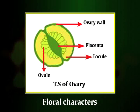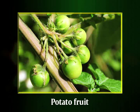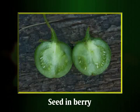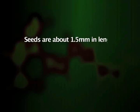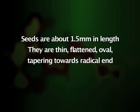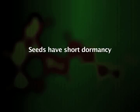The gynoecium consists of a distinct ovary, a style and a stigma. The ovary is bicarpellary, bilocular, syncarpous and superior. The style is variable in length, usually long and appearing well above the anther cone. On fertilization, the ovary develops into a berry — mostly round and fairly large in size. Numerous seeds are arranged in the two chambers of the berry along the periphery of the placenta. On maturity the seeds acquire a dull brown color; they are about 1.5 mm in length, thin, flattened and oval, tapering towards the radicle end. They have short dormancy and germinate readily under proper conditions.